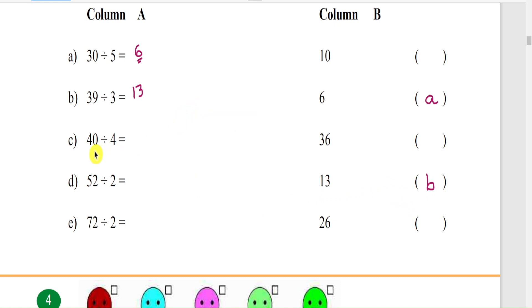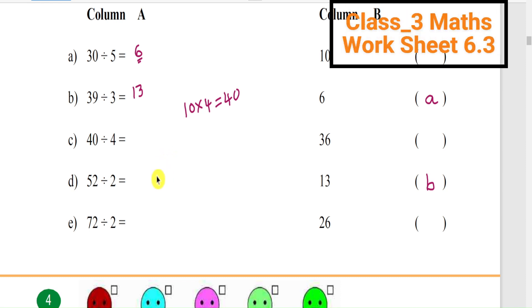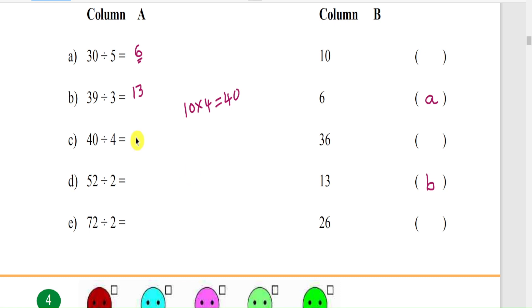Next, 40 divided by 4. 10 times 4 is equal to 40. So here we get the direct answer: 10 is the quotient. The answer is C.